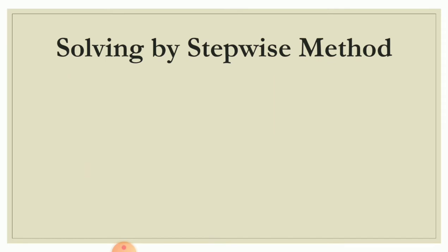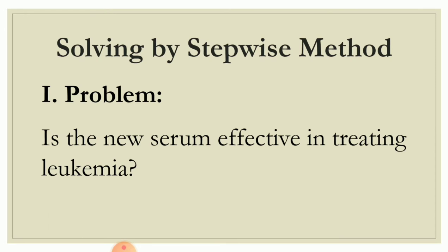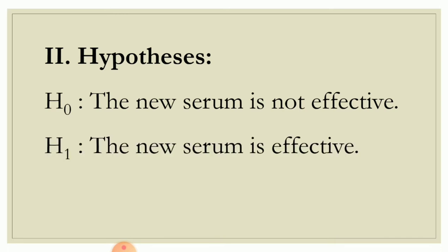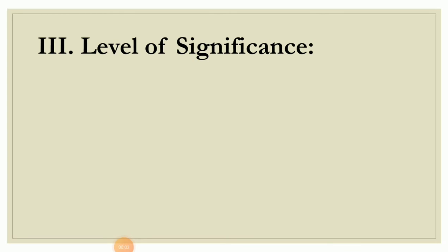Solving now by stepwise method, first is to identify the problem: Is the new serum effective in treating leukemia? Then formulate your hypothesis. The null hypothesis is: the new serum is not effective. The alternative hypothesis is: the new serum is effective. For the level of significance, alpha is given in the problem as equal to 0.05.